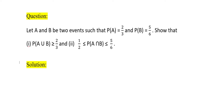This is a two-part proof. In this question, A and B are two events and their probability values are given: P(A) = 2/3 and P(B) = 5/6. For the first part, we need to prove P(A∪B) ≥ 2/3. To prove this, we will use the relation between A and A∪B.